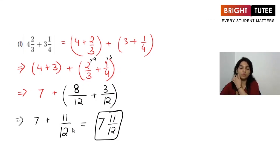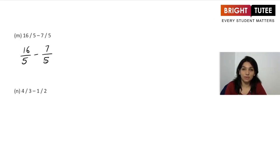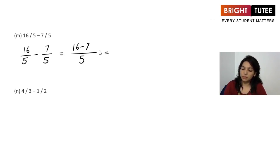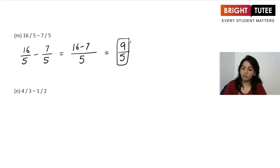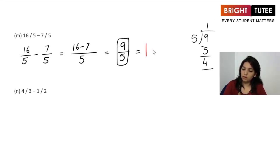Next: 16/5 minus 7/5. The denominators are already the same, so we simply subtract: 16 minus 7 is 9, giving 9/5. This is an improper fraction, so we convert: 5 goes into 9 once with remainder 4. The final answer is 1 and 4/5.